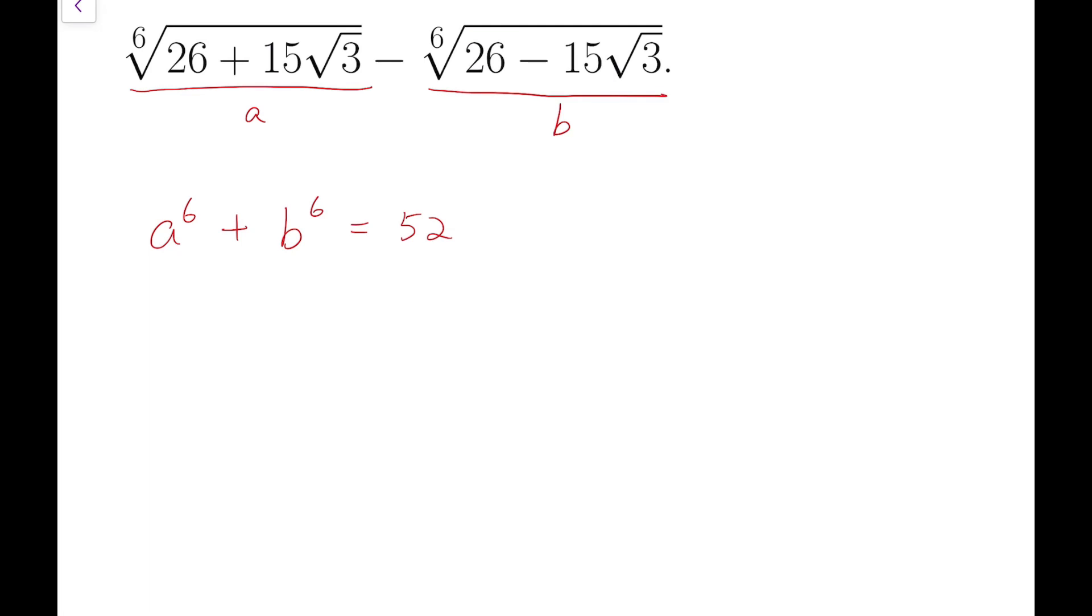Next I'm going to talk about the product, A times B. Even though the 6th roots are placed together, when they multiply, the terms inside 26 plus or minus 15√3, the product is 1. So when the 6th root is taken, it's still 1.